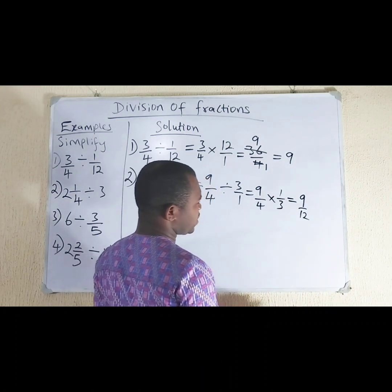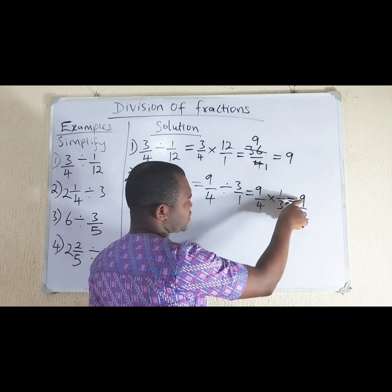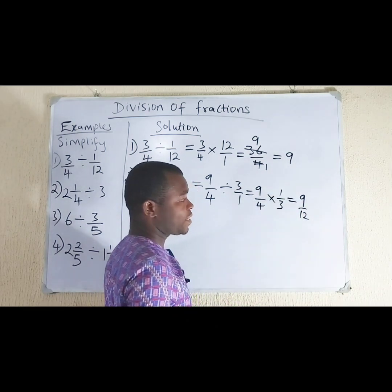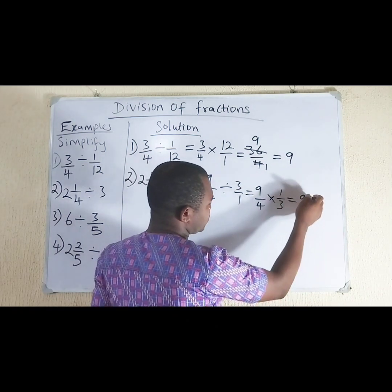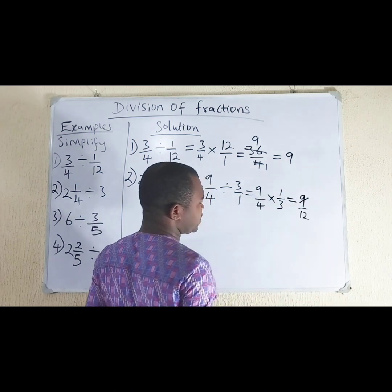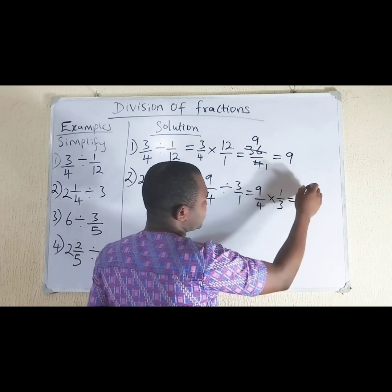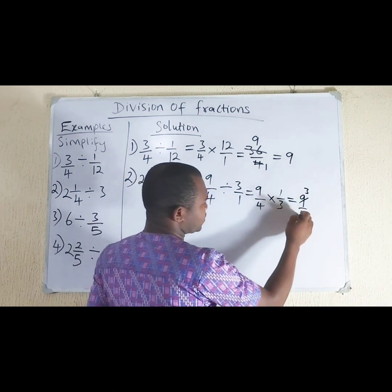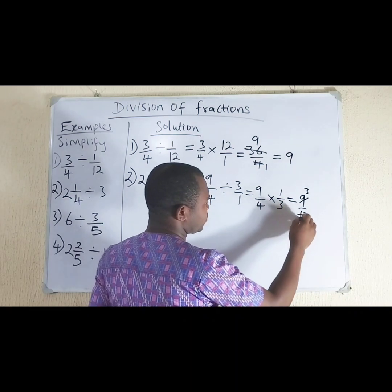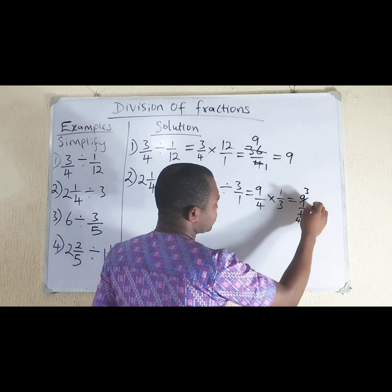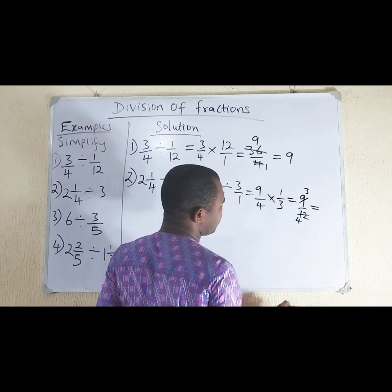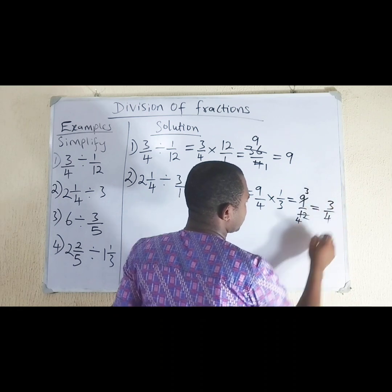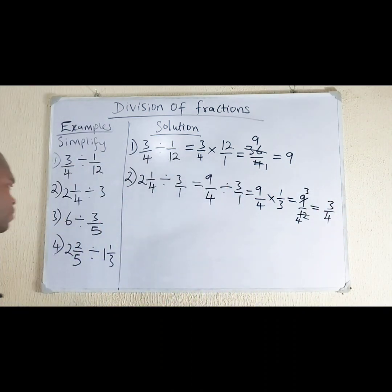We have a number which can divide both 9 and 12, and that number is 3. So, 3 divides 9 to give you 3, and 3 divides 12 to give you 4. So the final answer is 3 over 4.